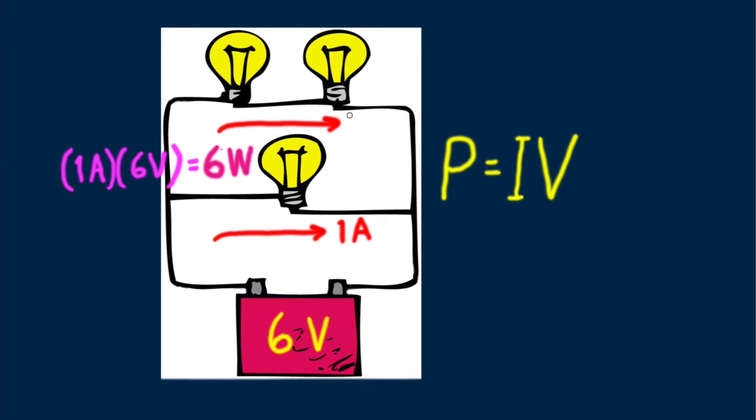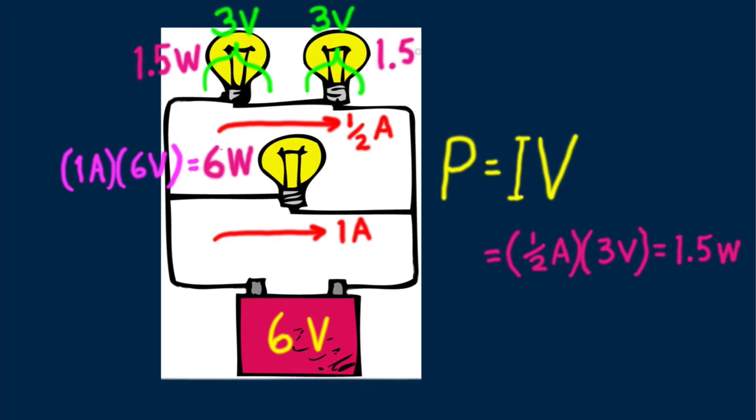If there's one amp in the lower branch, can you see the current in the top branch is half as much? One half amp? That's by way of Ohm's law. Twice the resistance for the same voltage means half the current. And what's the voltage across each bulb? For identical resistances of each, can you see it's three volts? That's right, a three volt voltage drop across each bulb. So the power consumed in each bulb of the top branch is one half amp times three volts equals 1.5 watts. So the top bulbs are dimmer.